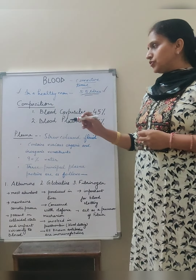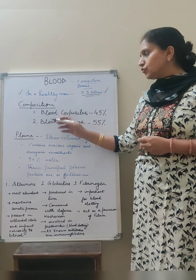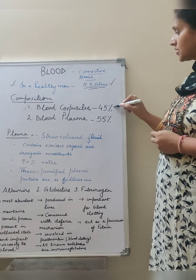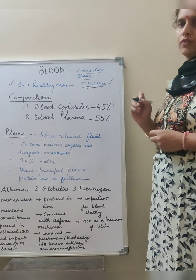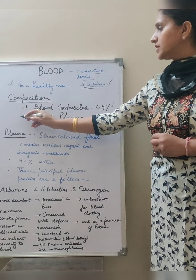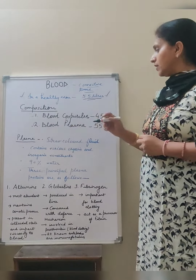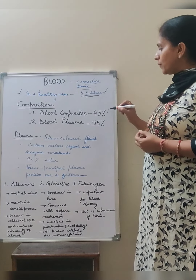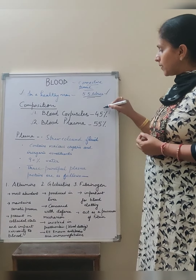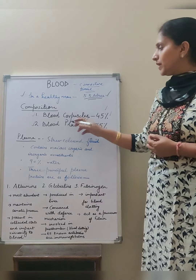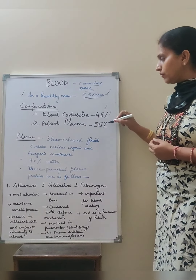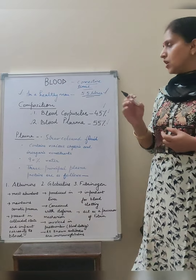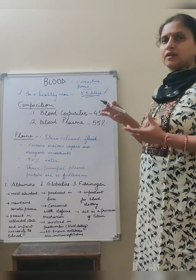Blood composition contains two parts. First is blood corpuscles, which is the cellular part of the blood. Second is blood plasma, which is the liquid part of the blood. The cellular part is about 45% while blood plasma is about 55%. That means the cells inside blood amount to about 45%.